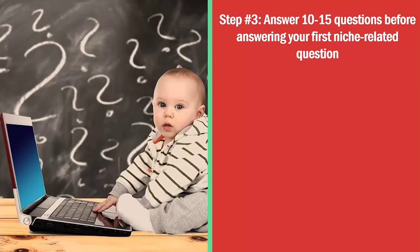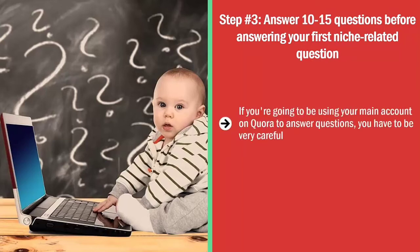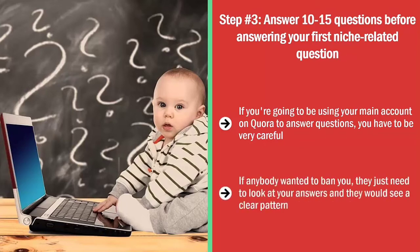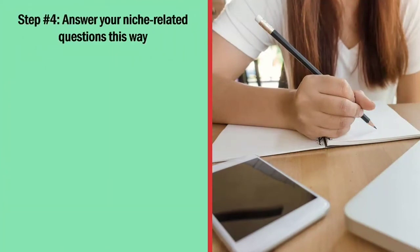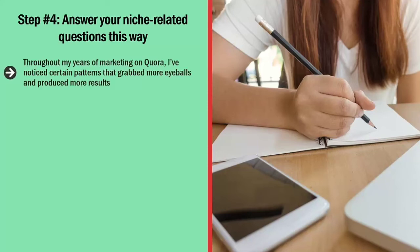Step number three: answer 10 to 15 questions before answering your first niche-related question. If you're using your main Quora account, you have to be very careful. You can't just answer questions directly related to your niche and ignore everything else — that creates an obvious pattern. If anyone wanted to ban you, they'd just look at your answers and see you were only answering a certain type of question and dropping your link. Instead, answer 10 to 15 questions across a wide range of topics before answering a niche-related question.